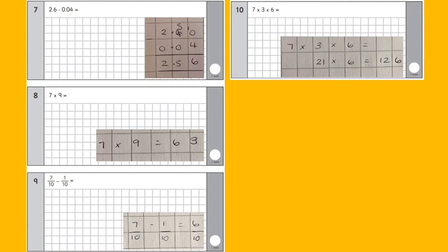Number eight, seven times nine, straightforward, just do your multiplication, which is 63. Number nine, we've got seven tenths subtract one tenth, which is straightforward because you have the denominators that are already the same.